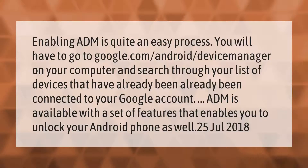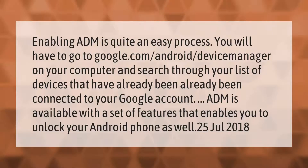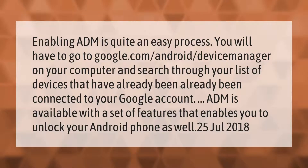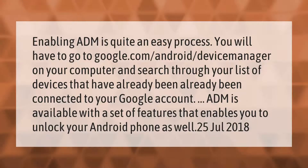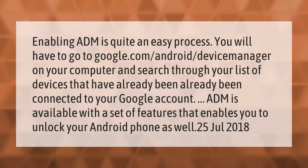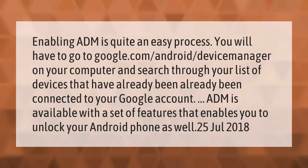Enabling ADM is quite an easy process. You will have to go to google.com/android/device-manager on your computer and search through your list of devices that have already been connected to your Google account. ADM is available with a set of features that enables you to unlock your Android phone as well.